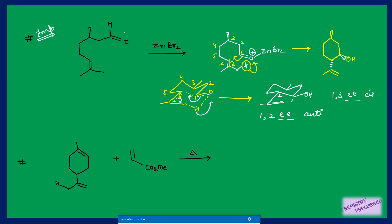The next example looks simple, but has an important point. The enophile is easy to identify. For the ene, there are two pi bonds — one inside the ring and one outside. The double bond inside the ring is hindered in nature while the one outside is free to react. So whenever you have this type of example, always prefer the proton outside the ring — it will participate in the reaction; the ones inside the ring will not.